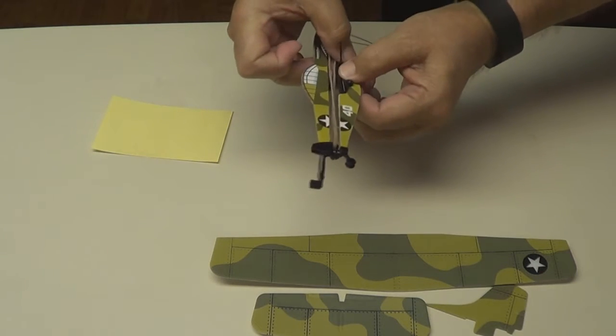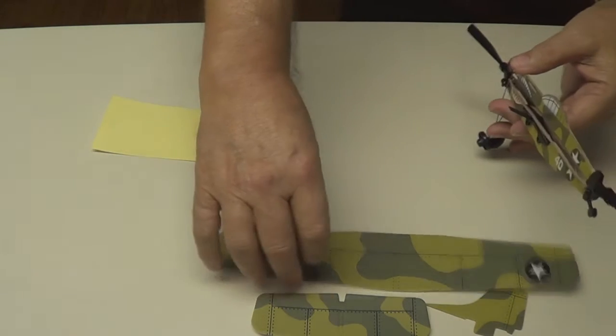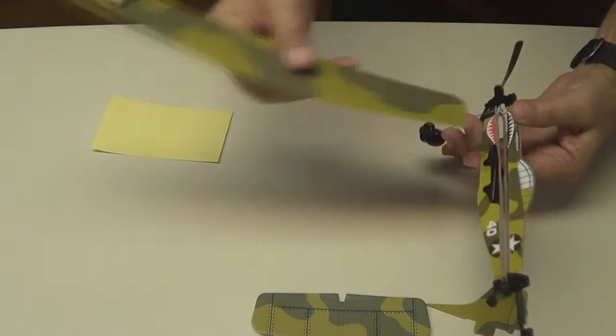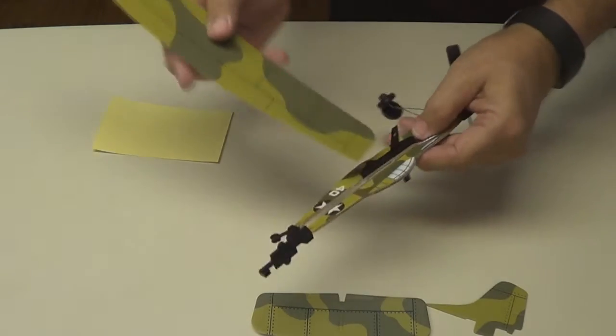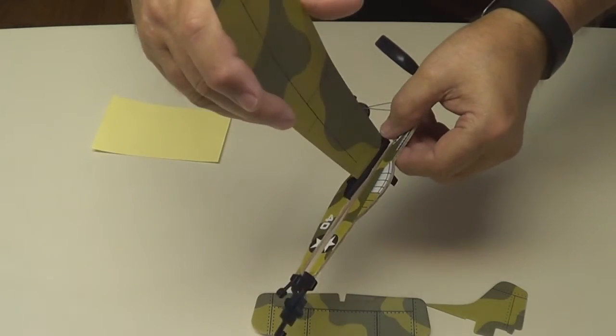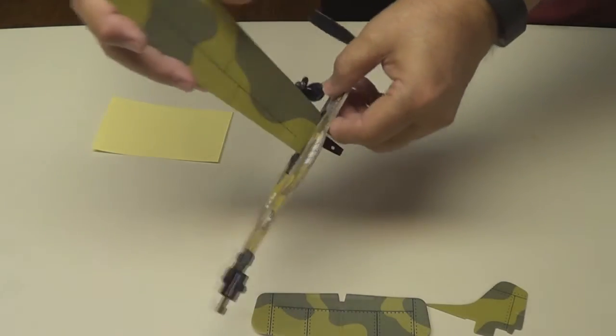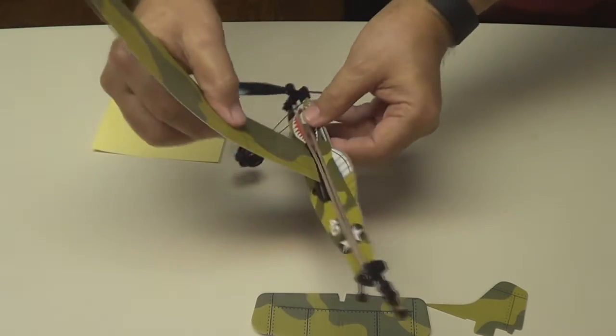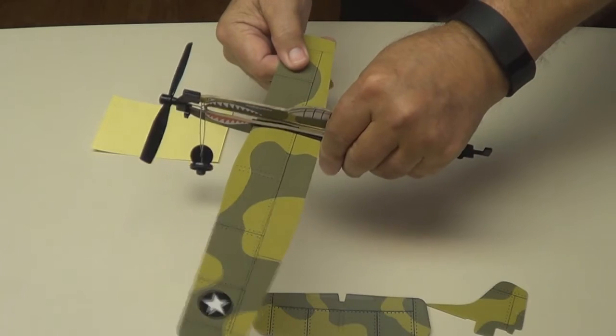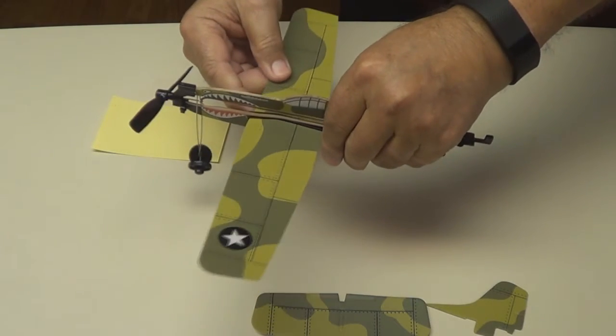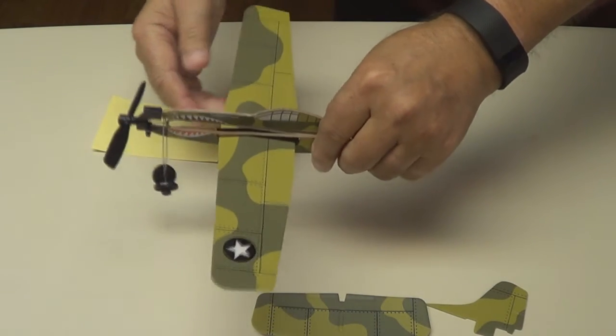Take the wing down. It slides through the slot on those wing supports. Make sure your rubber band is above the wing. Slips through right there. Pull it over to the center. Make sure it's evened up real good. Right there.